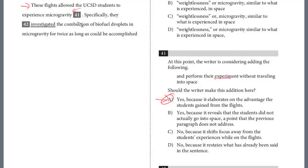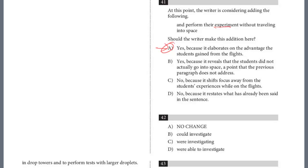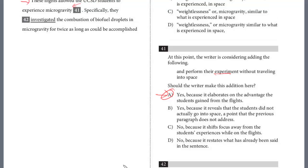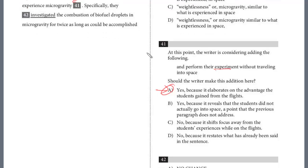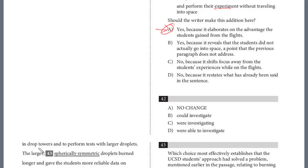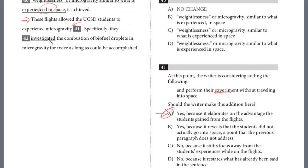Specifically, they investigated the combustion of biofuel droplets in microgravity for twice as long as could be accomplished in drop towers to perform tests with larger droplets. And this is really just testing the correct tense. So for 42, we have they investigated. Look for the rest of the sentence for clues: is twice as long as could be accomplished, and then drop down in drop towers and to perform. This is parallel structure. We have an and, there's two parts. This is the infinitive. So we're not going to state investigated, we want, we're able to investigate. We want that infinitive.